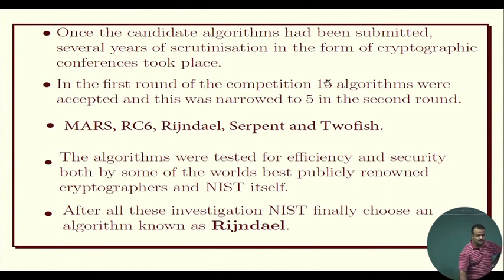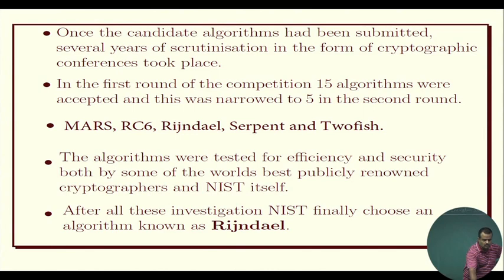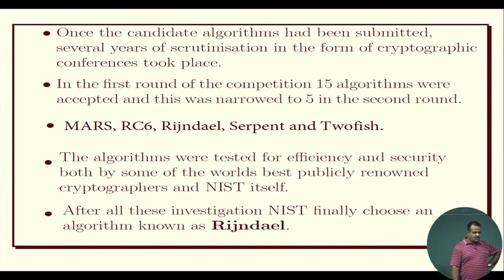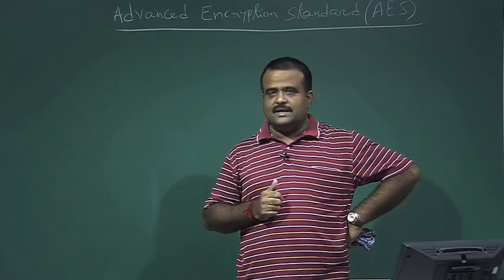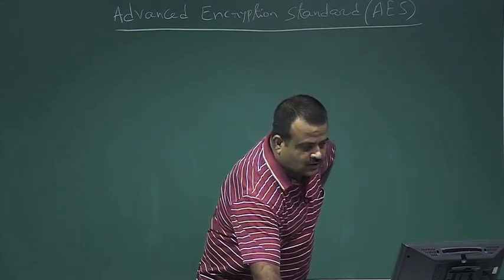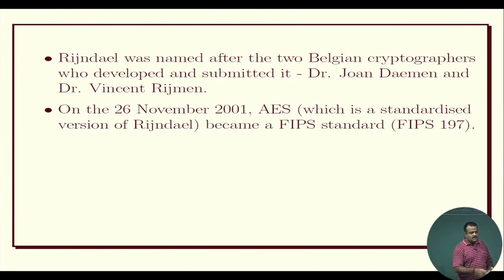In the first round, many submissions were received, and fifteen algorithms were selected. After further investigation and attacks in the second round, five ciphers were selected: MARS, RC4, Rijndael, Serpent, and Twofish. In the final round, Rijndael was selected as the winner, as the other ciphers may have had some attacks or were not well-documented.